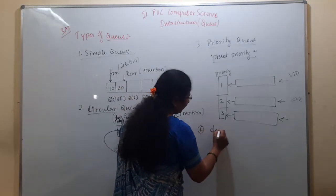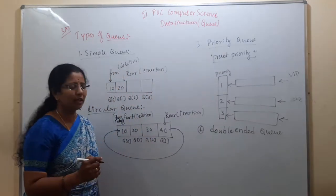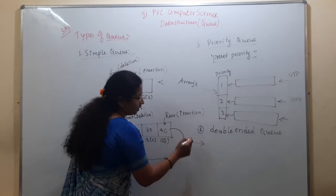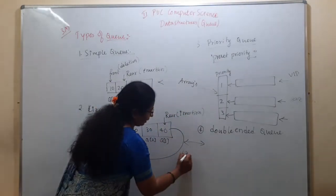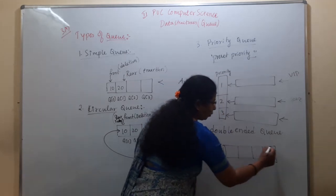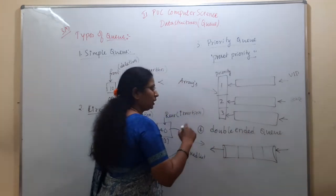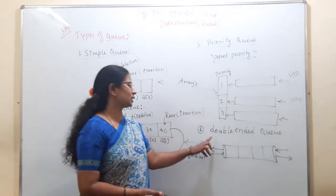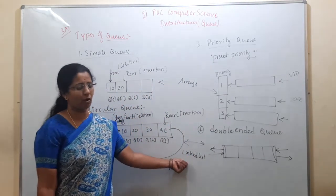The fourth type is a double-ended queue. Circular queue and double-ended queue are implemented with linked lists — the double-ended queue specifically with a doubly linked list, and the circular queue with a circular linked list. In the double-ended queue, both insertion and deletion are possible at both ends, unlike a simple queue where insertion is at one end and deletion at the other.